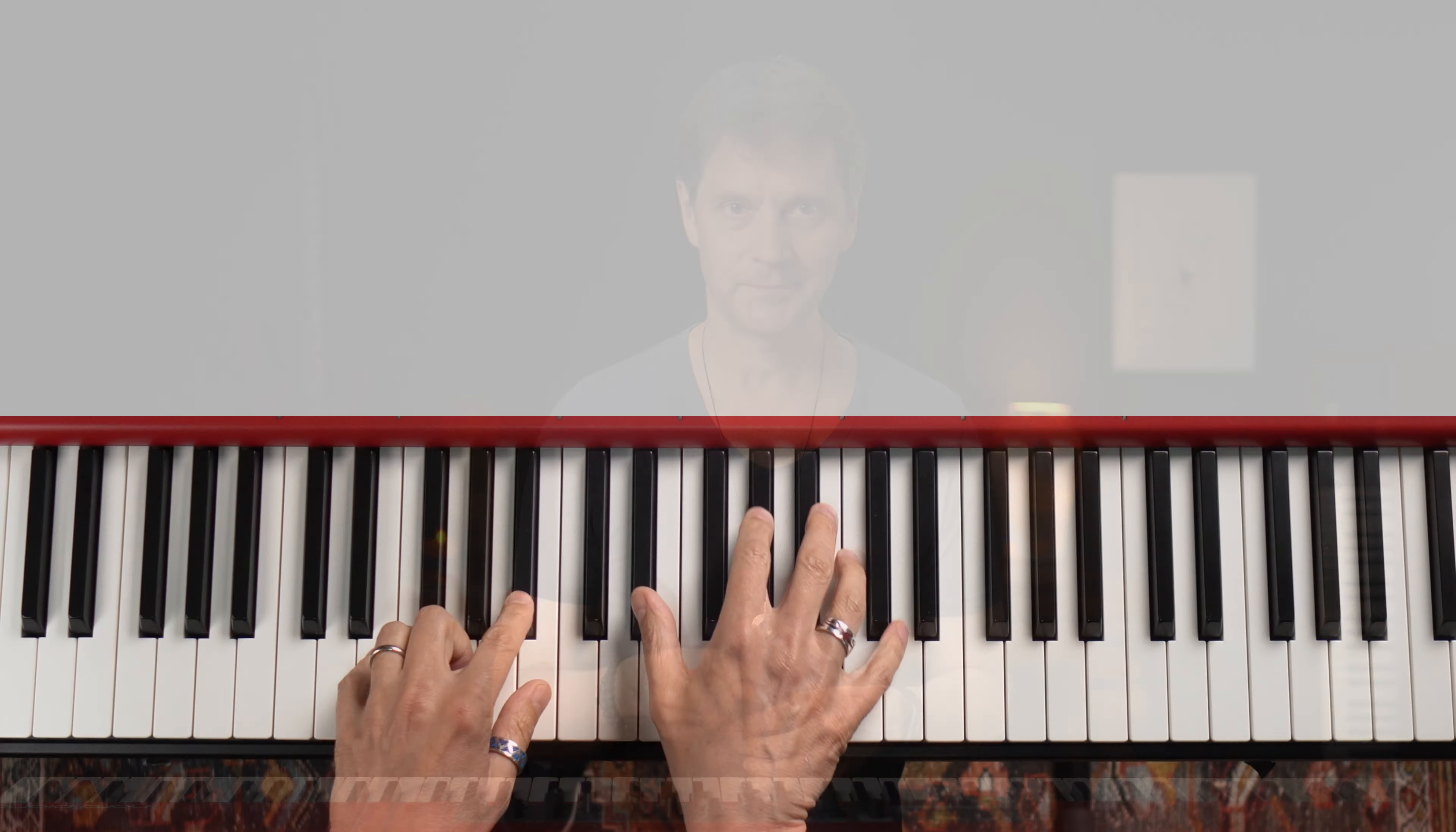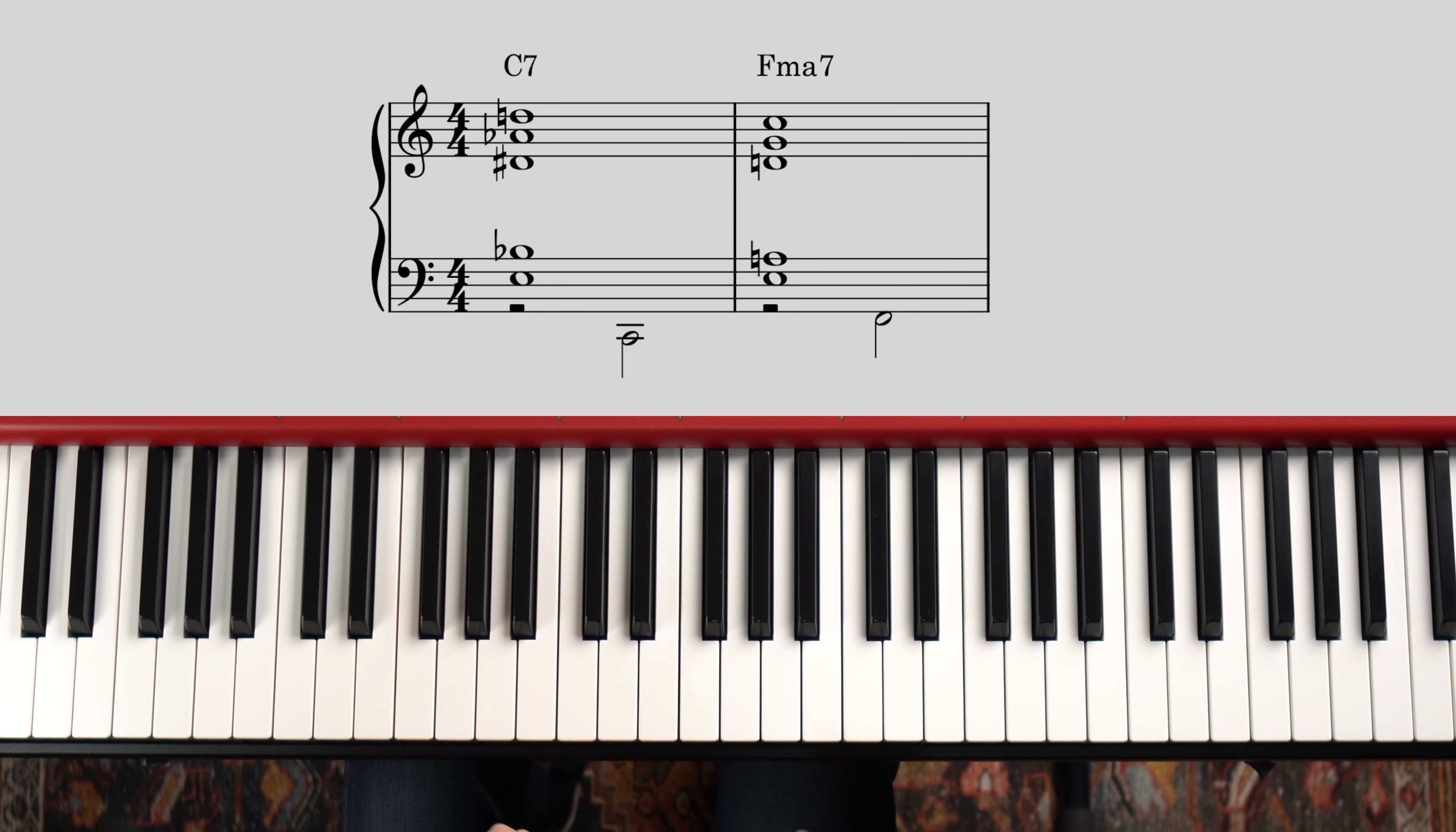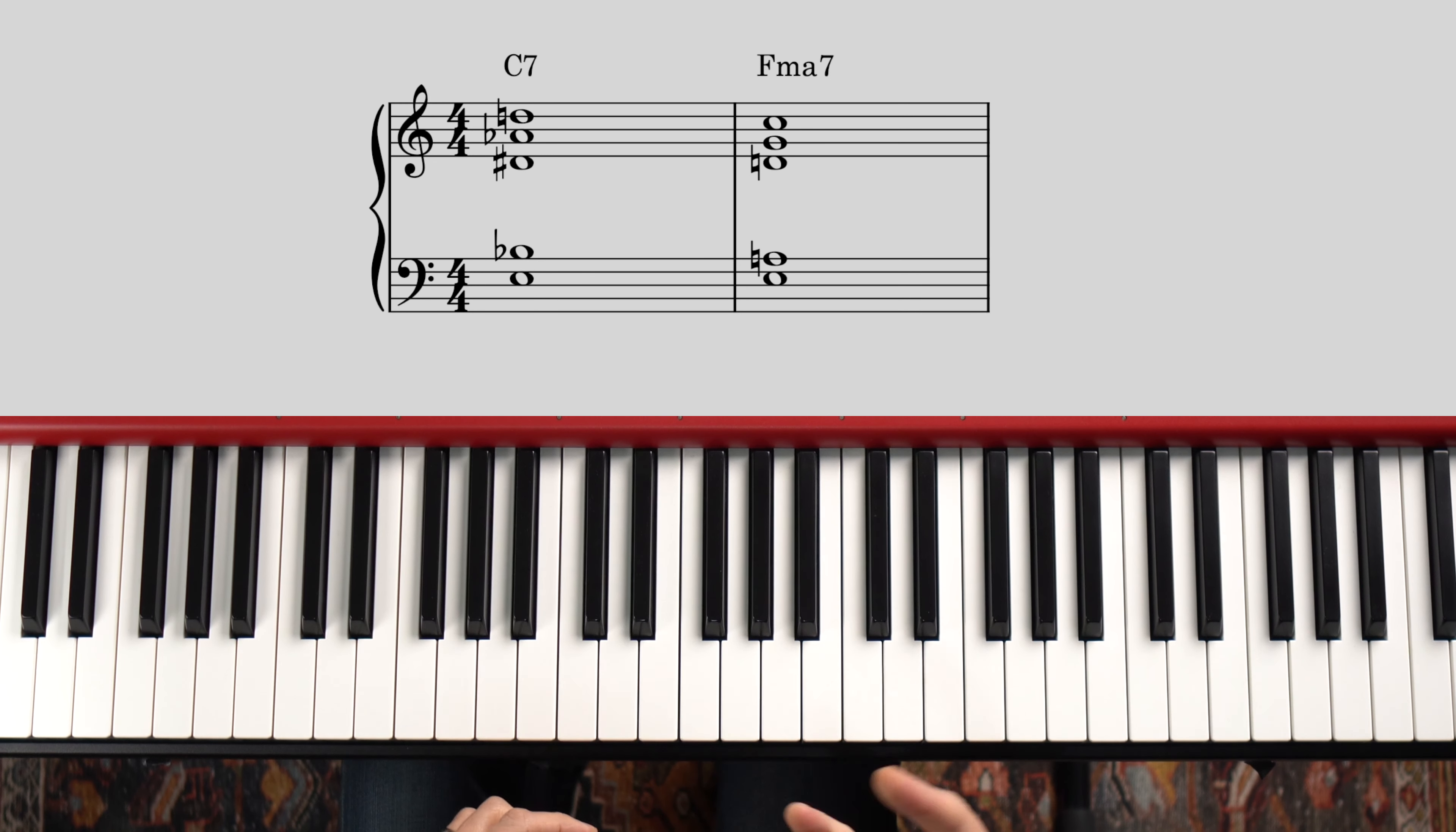See, a big part of making dissonance work is in how you resolve it. Check this out. The most common resolution of a C7 chord is to an F chord. If I resolve my illegal voicing to this F major 7 voicing, it sounds pretty convincing.